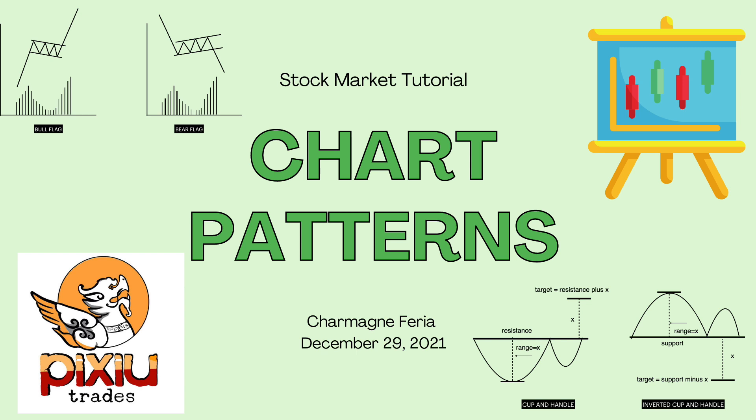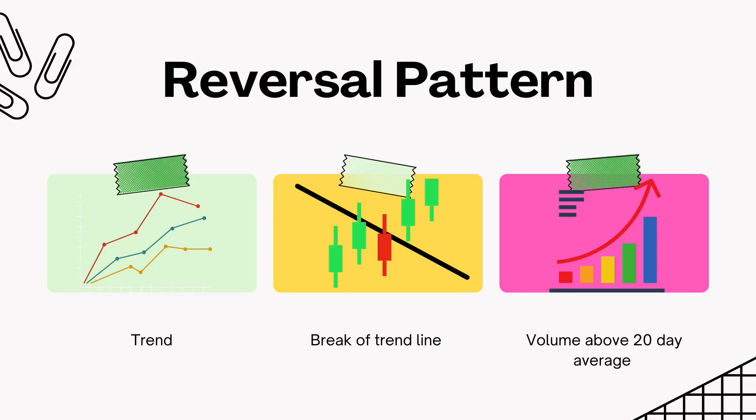There are two kinds of chart patterns: a reversal pattern and a continuation pattern. A reversal pattern indicates that the trend will reverse once the pattern is complete. So the first requirement for a reversal pattern is an existing trend.